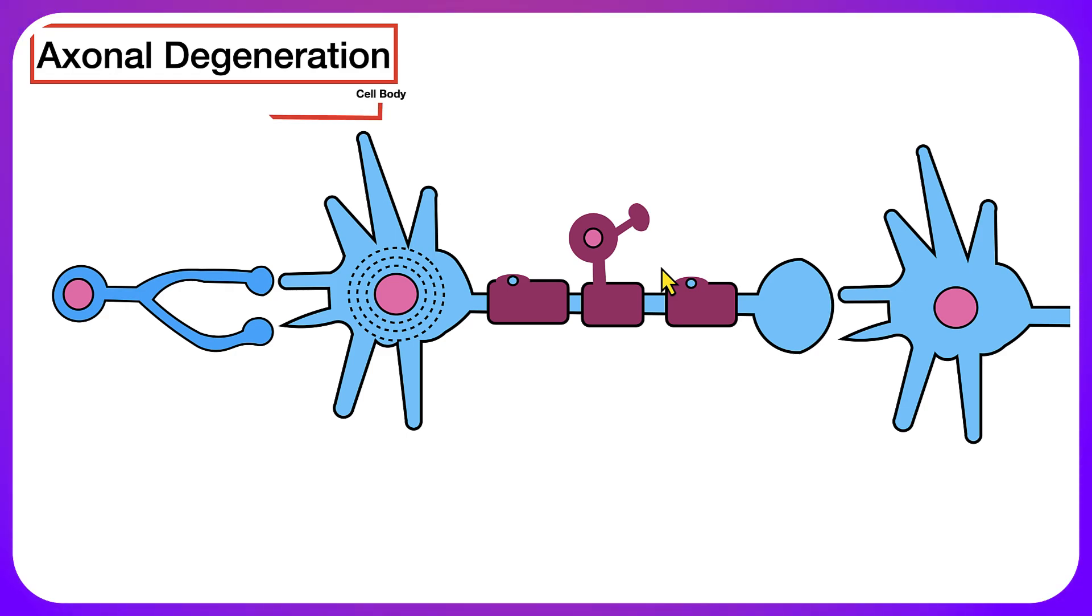The first is going to be the cell body. The cell body is going to contain organelles, the nucleus, as well as the endoplasmic reticulum or Nissl substance. Projecting from the cell body, we also have the dendrites. The dendrites are projections that project off of the cell body, and they're going to receive signals from other neurons.